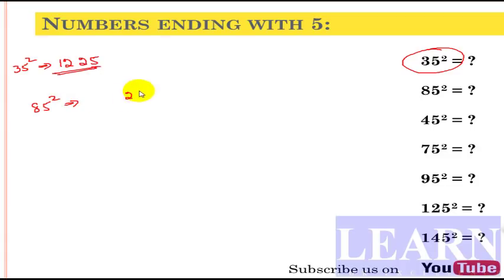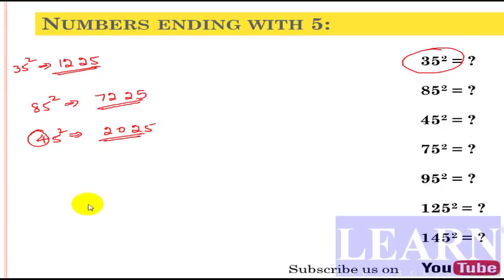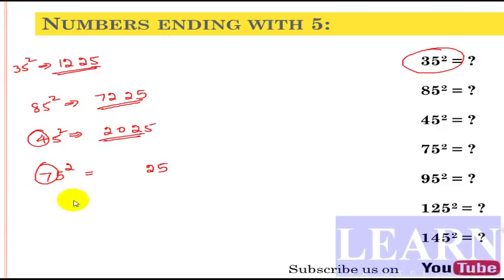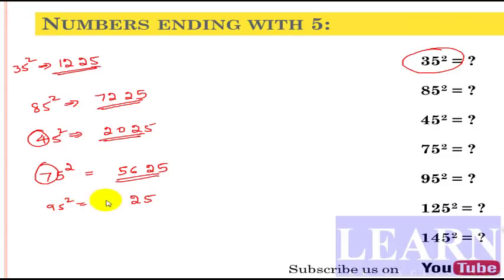For 45 squared: write 25 last, and 4 times 5 is 20, so the answer is 2025. For 75 squared: write 25, and 7 times 8 is 56, so 5625. For 95 squared: write 25, and 9 times 10 is 90, so the answer is 9025.